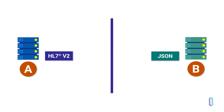For instance, system A sends and receives patient information as HL7v2 messages, and a patient-facing application on system B uses a FHIR repository with data represented in a JSON format. As it stands, system A cannot contribute to the FHIR repository and, thus, the application on system B cannot utilize that system's patient data.